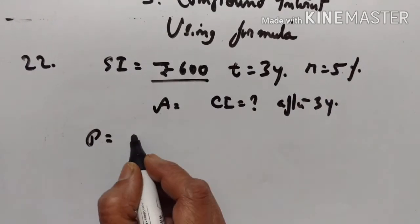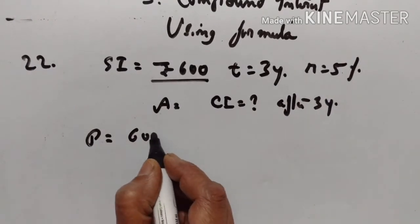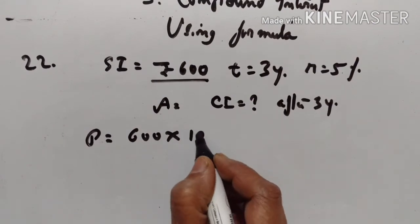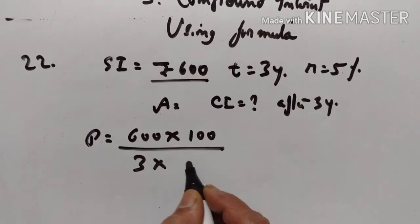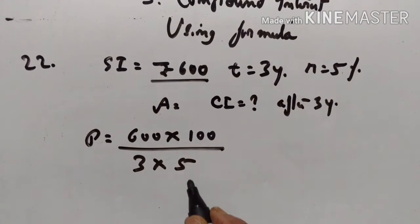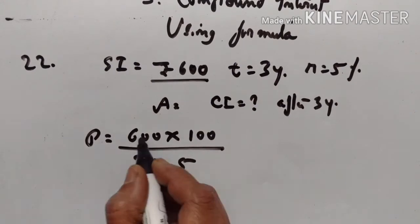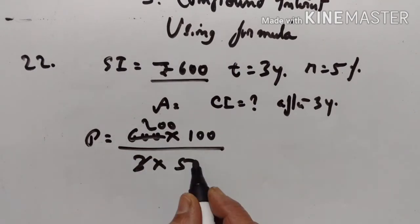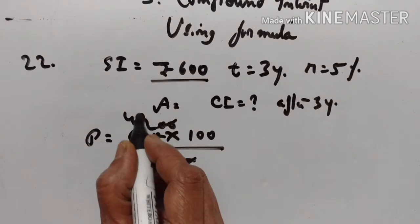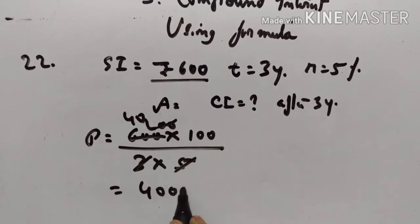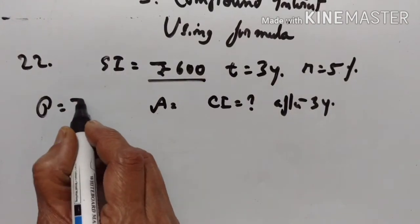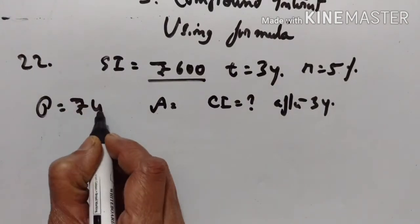P is equal to SI into 100 upon TR. 5 ones are 5, forties are 40, 40 into 100 is equal to 4000. So, principal is equal to rupees 4000.